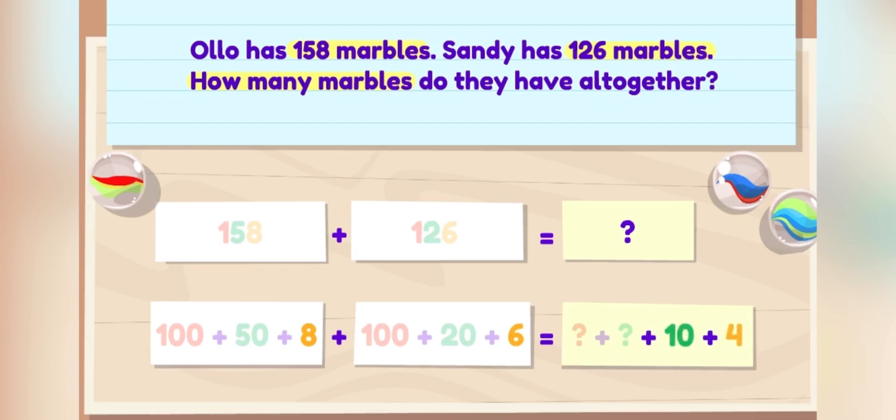Now let's add the tens. 50 plus 20 is 70. Then, let's add the hundreds. 100 plus 100 equals 200. Almost there. Let's look at our final number.